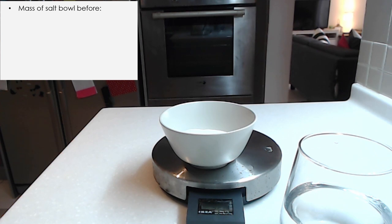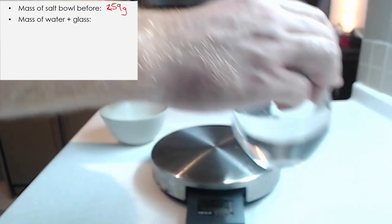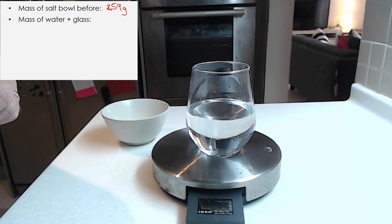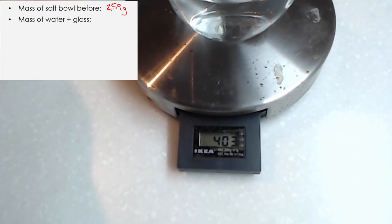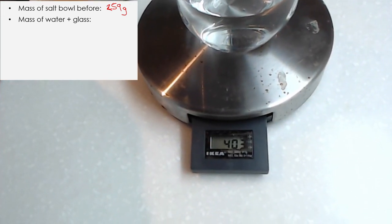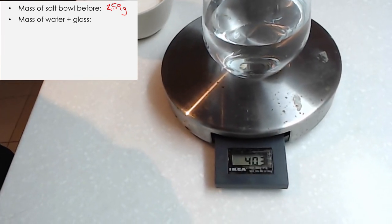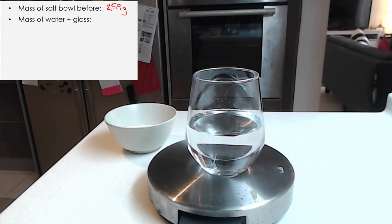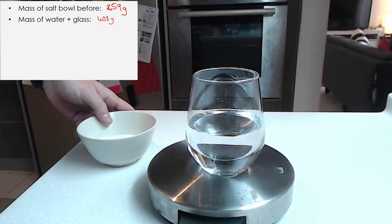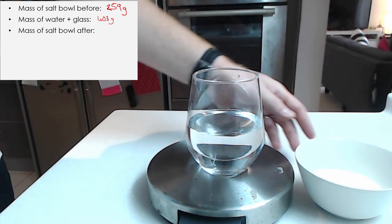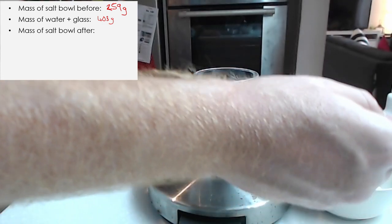So I'm going to write that down. The mass before is 259 grams. Remember, we always put a unit when we're writing something. The next thing I want to know is the mass of the water and the glass together. So I'm going to put that on my balance. And you can see that the water and the glass as one thing comes to 403 grams. So again, I can just write that down on here. 403 grams.